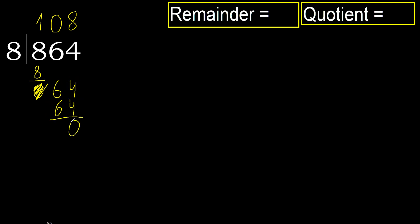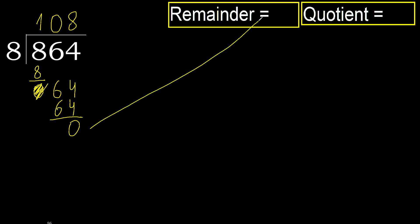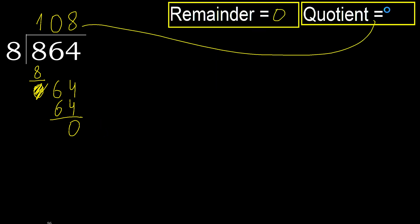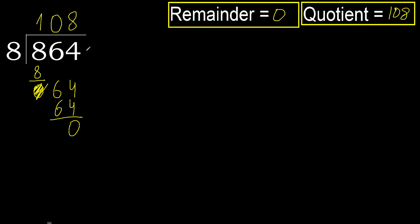Subtract. Next — that is not a number, therefore finish it. Okay, 0. Therefore 864 divided by 8 is the answer here.